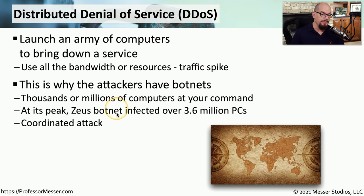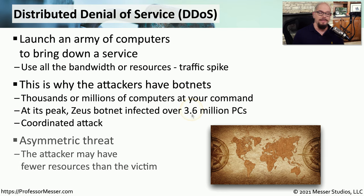For example, at its peak, the Zeus botnet infected over 3.6 million computers. This allowed whoever was running the botnet to control all of those systems and create distributed denial of service attacks, among other things. With a DDoS, it's very common for all of the individual attacking devices to have fewer resources than the target they're attacking, but because all of them are attacking at the same time, they're able to easily overwhelm the resources of the victim.